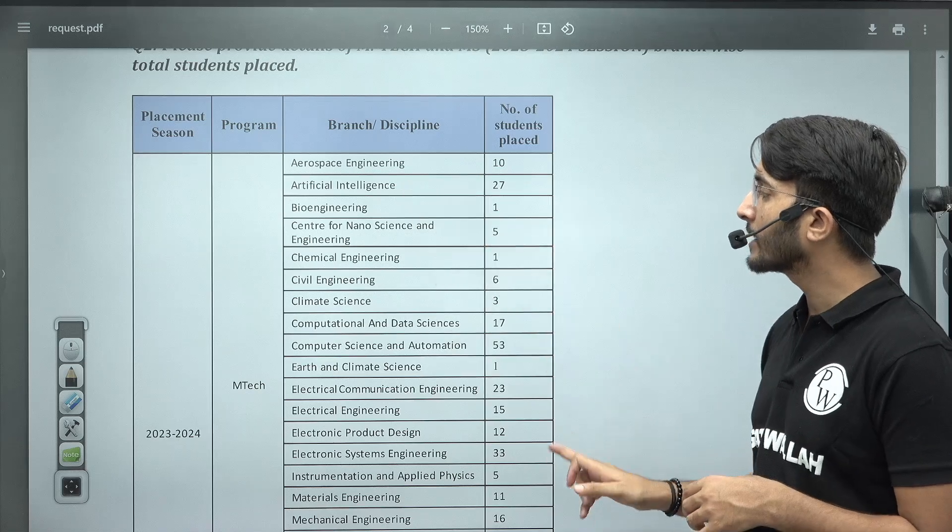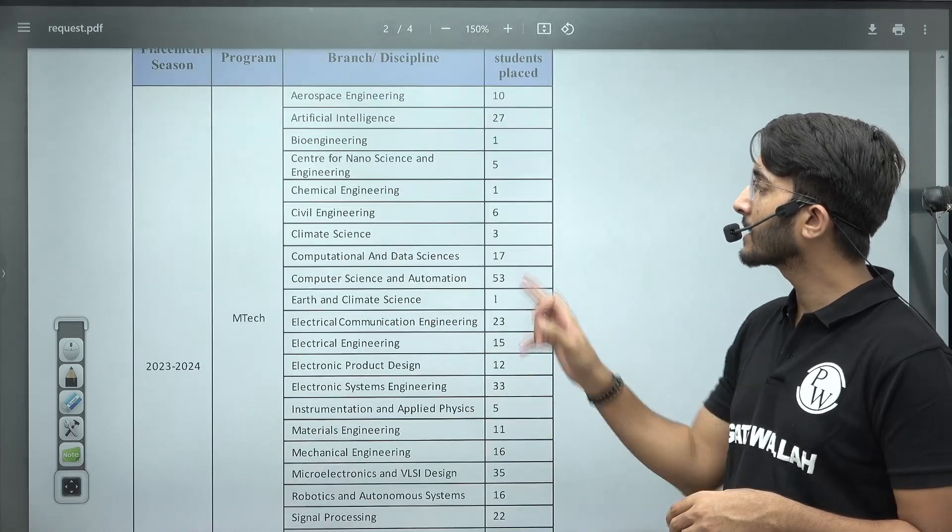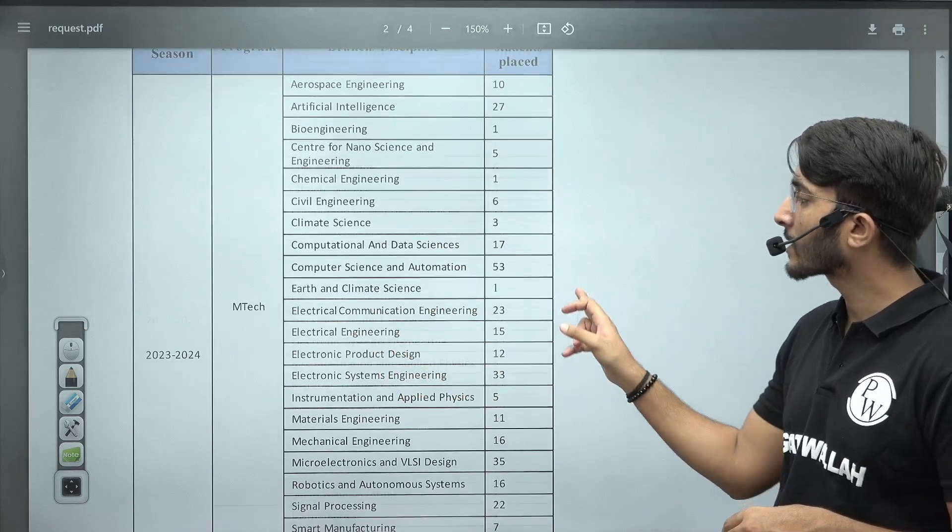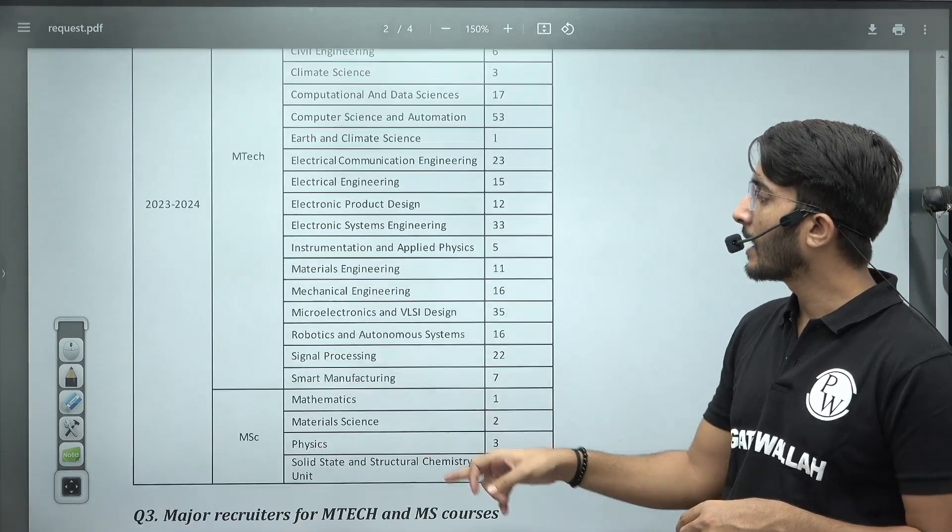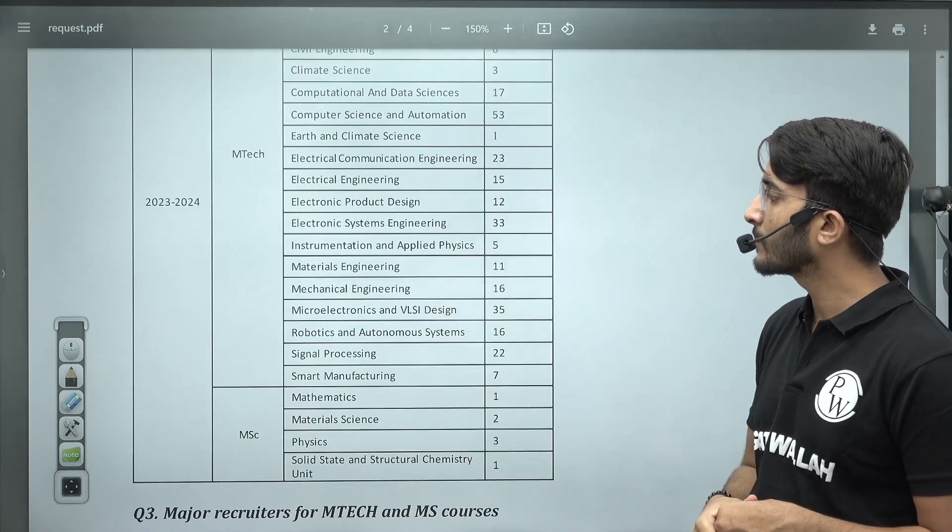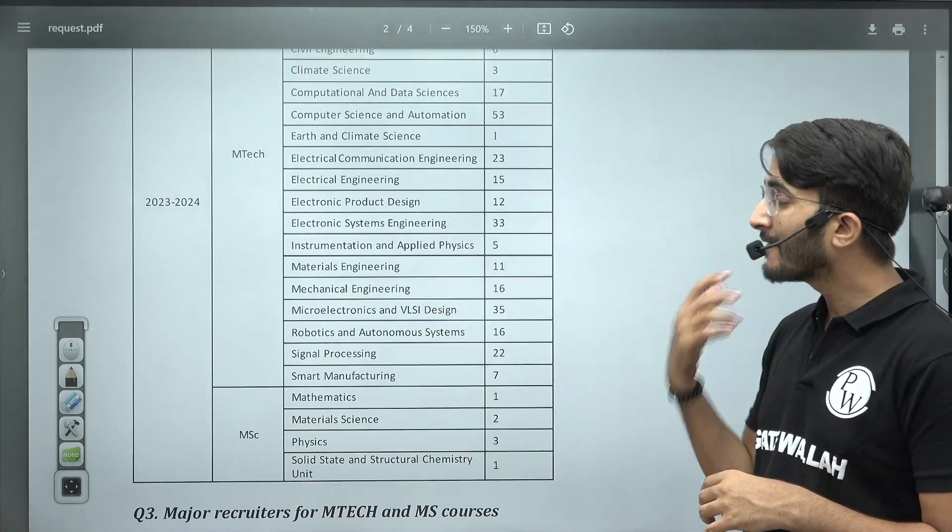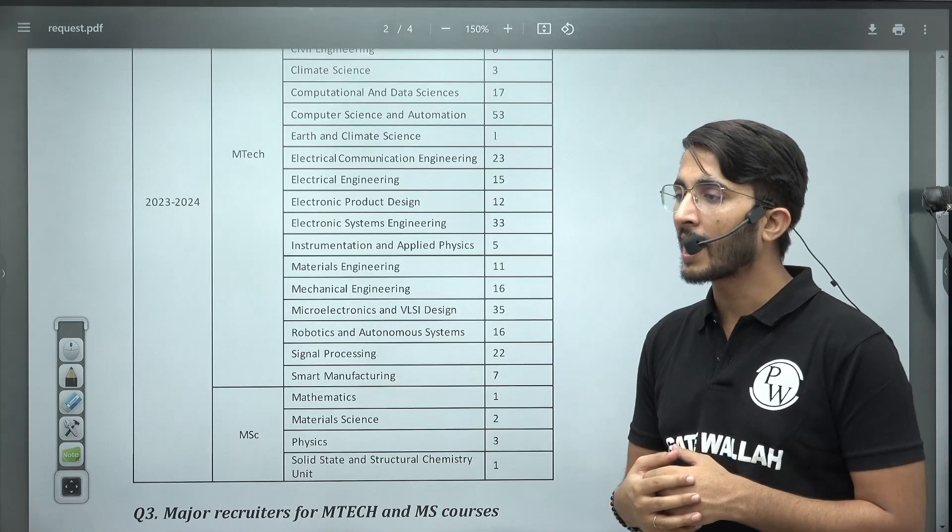Civil Engineering 6 students placed. Similarly, if you talk about Electrical 15, Electrical Communication 23, Computer Science 53 students placed, Mechanical 16 students placed.